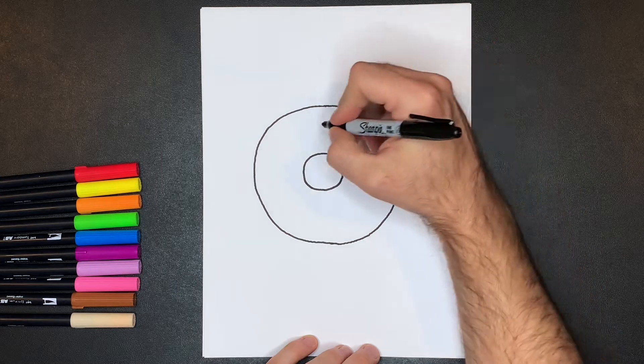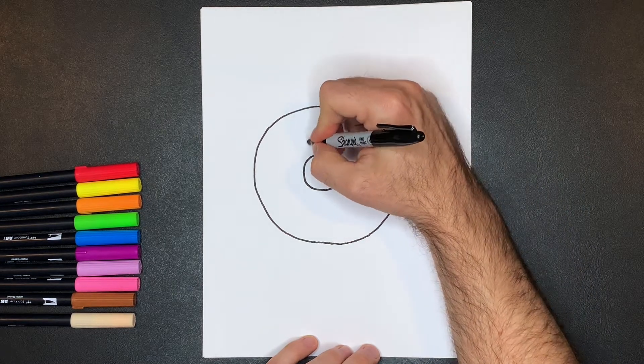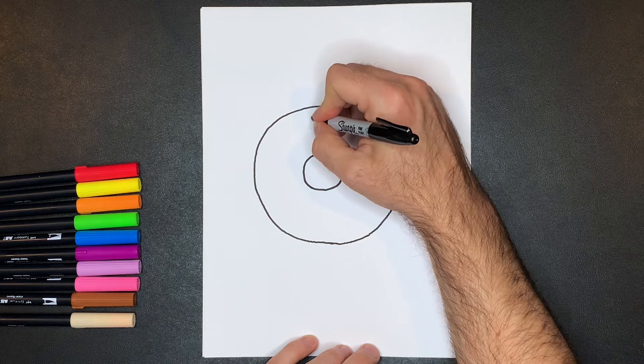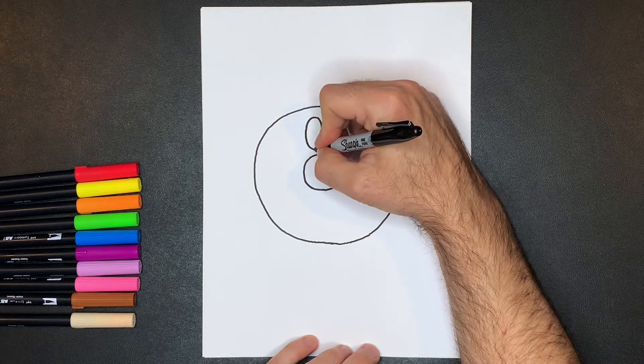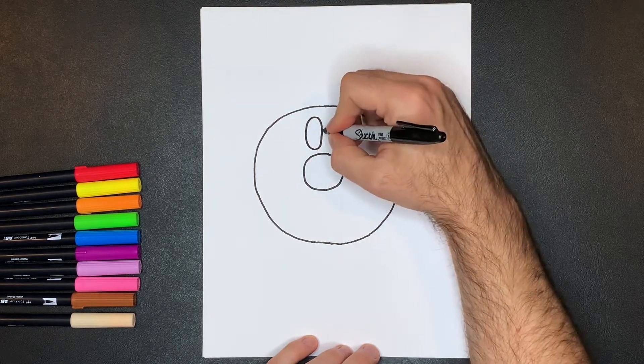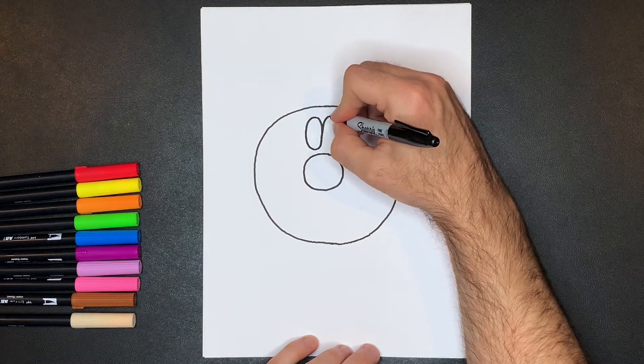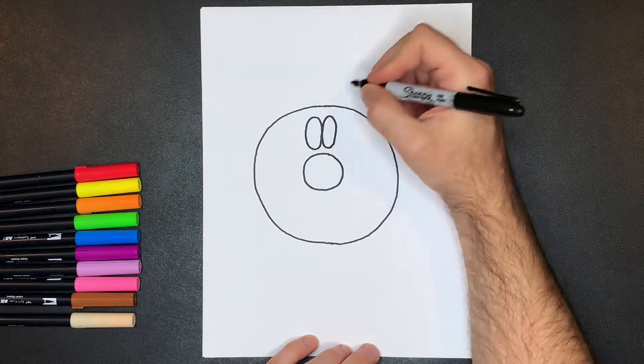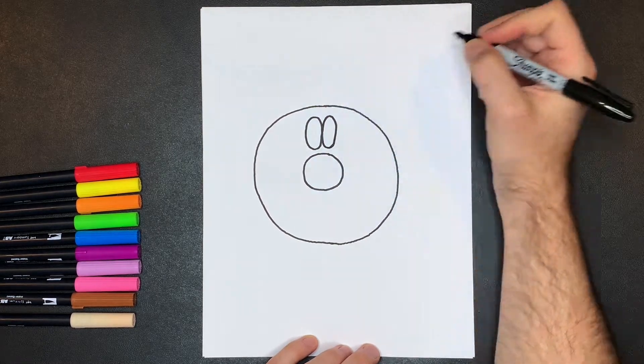Next we're going to draw the donut's eyes, that's going to start right here, we're going to do two oval shapes. So one, and then two, like that. Mine's a little wobbly there, there we go.